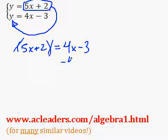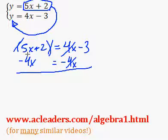Now I can subtract 4x from both sides of the equation. 5x minus 4x is just x, the plus 2 comes down, and that's equal to negative 3.